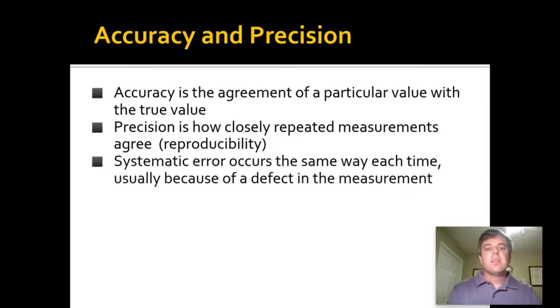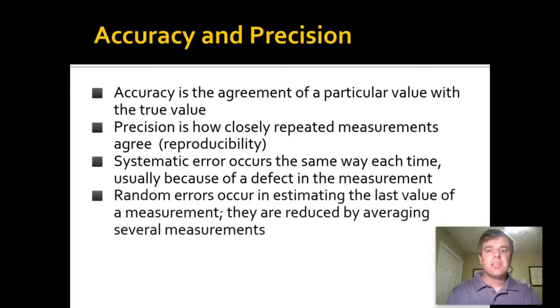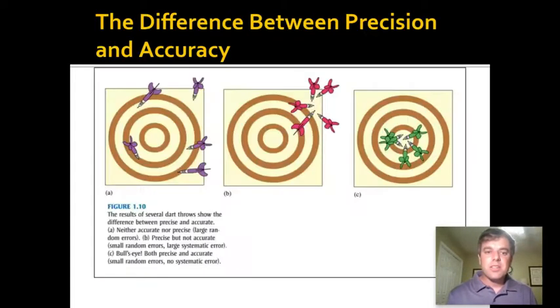Systematic error occurs the same way each time, usually because of a defect in the measuring device or you don't know how to use the measuring device. Random errors occur in estimating the last value of a measurement and those are reduced by averaging several measurements. For instance, some of our digital balances read to the thousandth of a gram, and if you put it on there once it may say 1.355 grams, and then you weigh it again it says 1.356 grams.